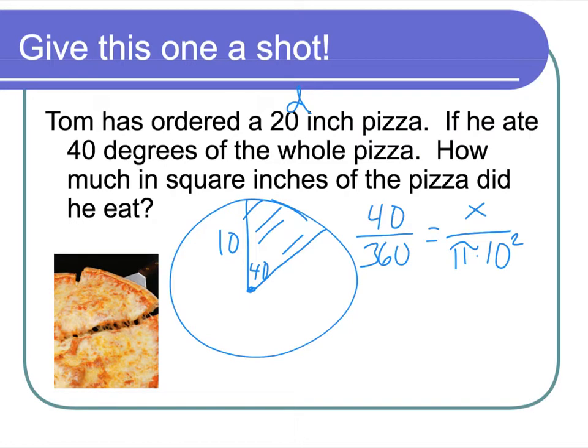I would have my central angle over 360 is equal to my area of the sector, we'll just call it x, over my total area, π times my radius of 10 squared. Now, we are going to keep this in terms of π. So let's multiply the 100 times the 40. 10 squared is 100. And I'm going to divide that by 360, and I get 11.1 repeating. So I'm going to hit math, fraction, and I'm going to turn it into a fraction, which is 100 over 9π inches squared.